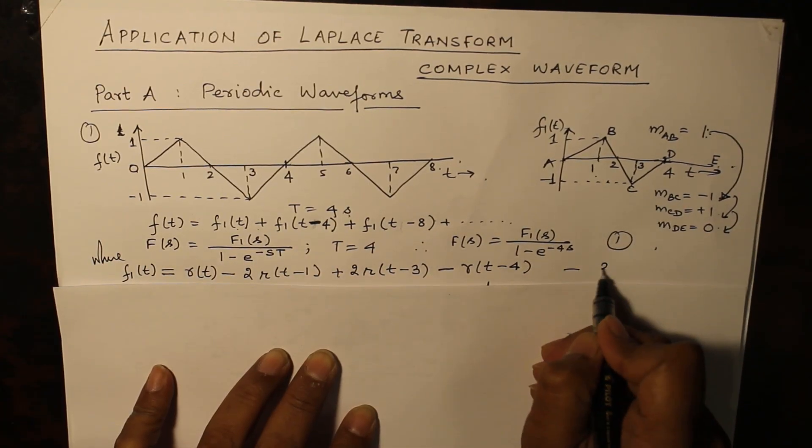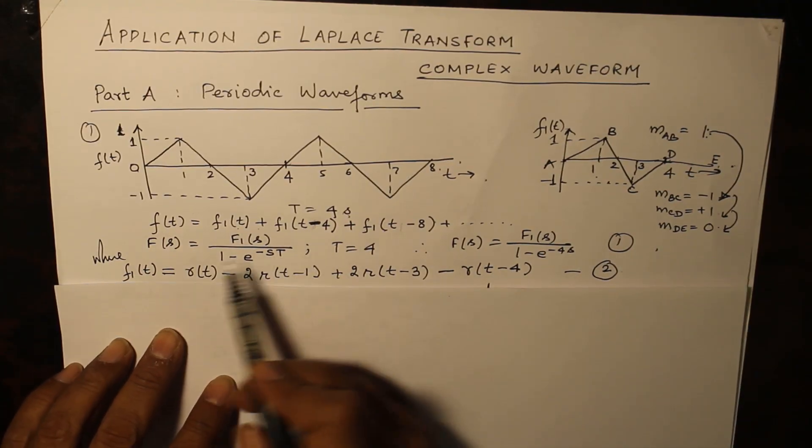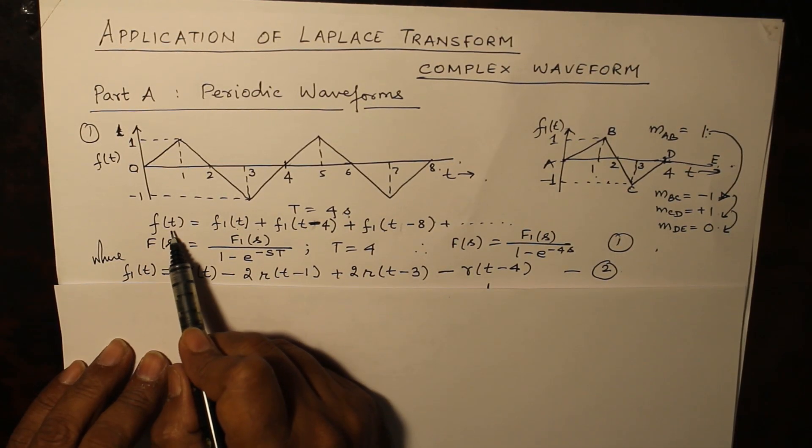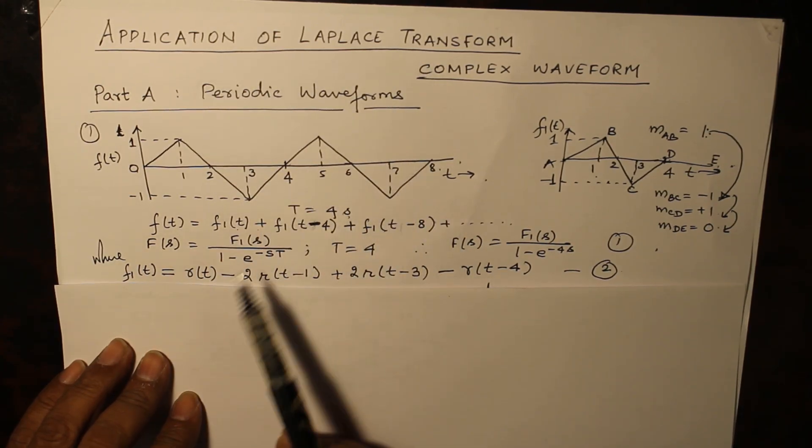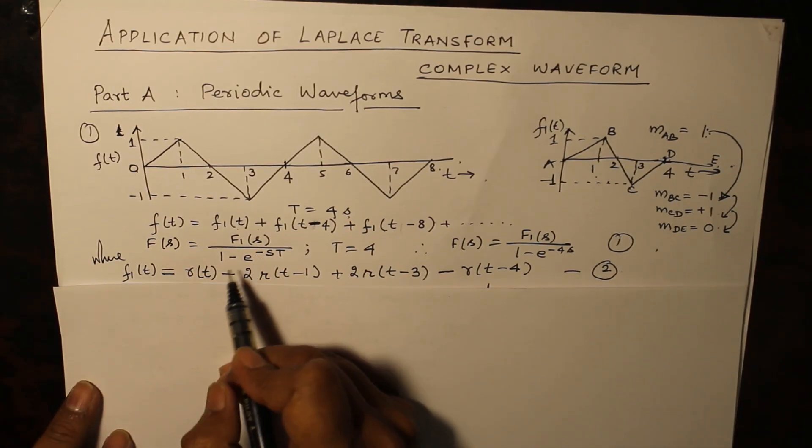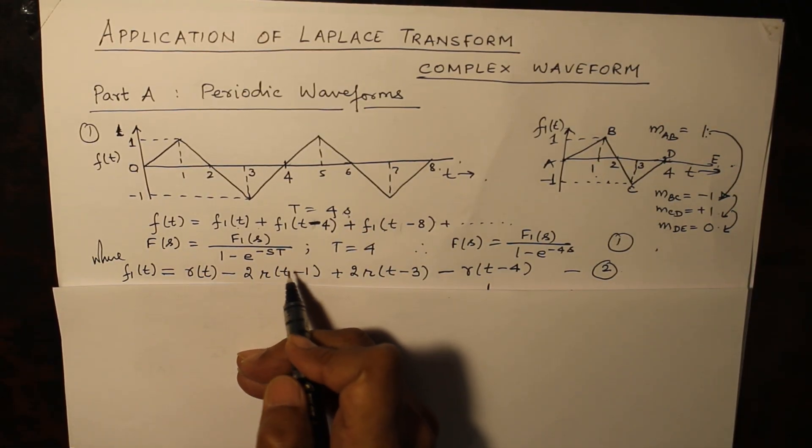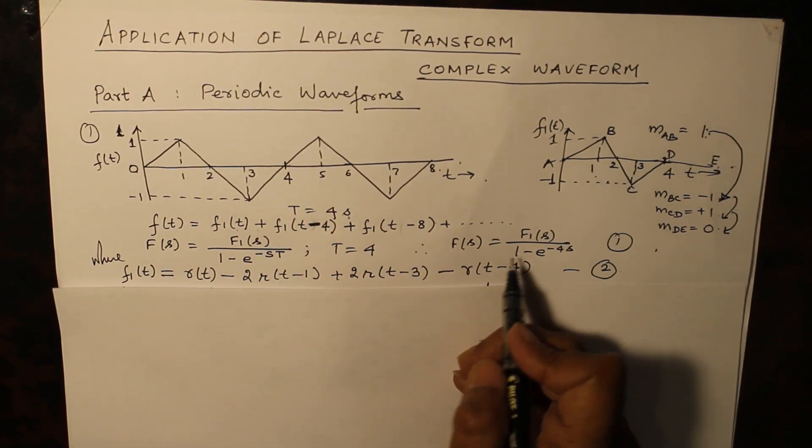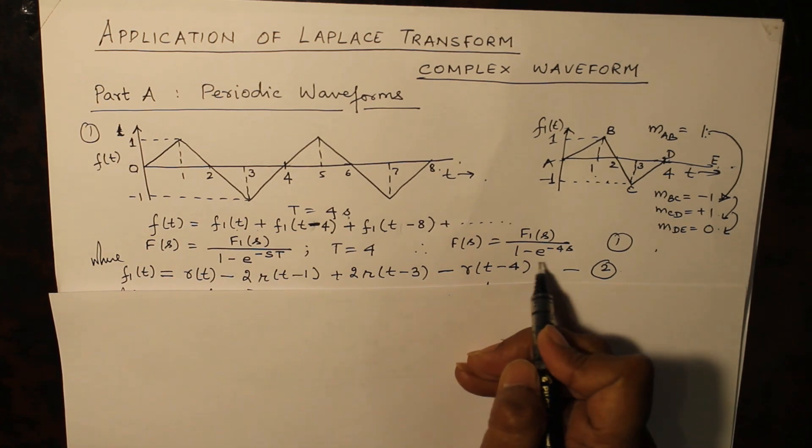Now coming back to the Laplace transform, on taking Laplace transform of f(t), F(s) as per the property of Laplace transform which we are applying here is f1(s) divided by 1 minus e raised to the power minus sT. The time interval is 4, and F(s) thus gives you the value of f1(s) over 1 minus e raised to the power minus 4s.